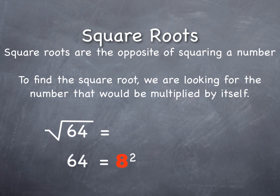8 squared, or 8 times 8, is equal to 64. Square root asks us to think this way—the answer to the square root is 8. The square root of 64 is 8 because 8 squared equals 64. It's just thinking about it in the reverse direction.